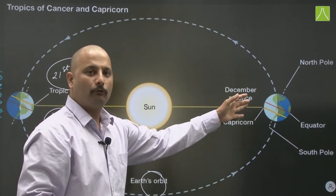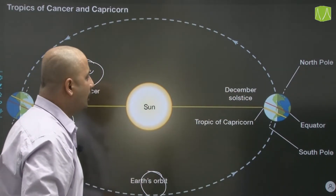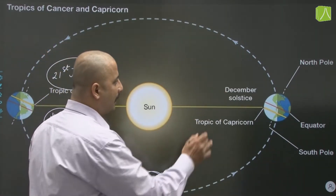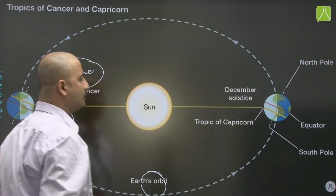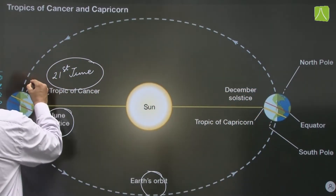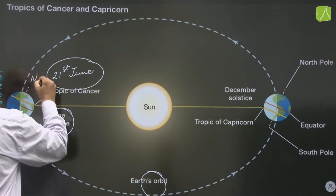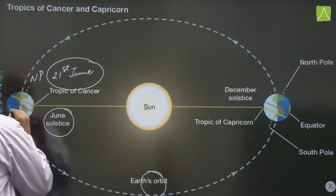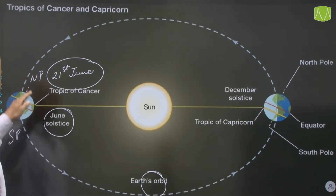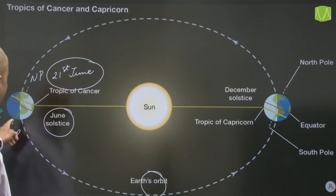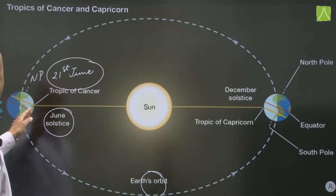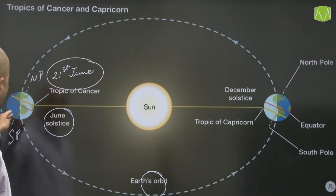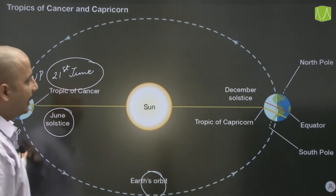Further, moving towards the third position — the December solstice. Here you can see the north pole and south pole positions. The north pole is facing away from the sun and the south pole is facing towards the sun during December solstice.